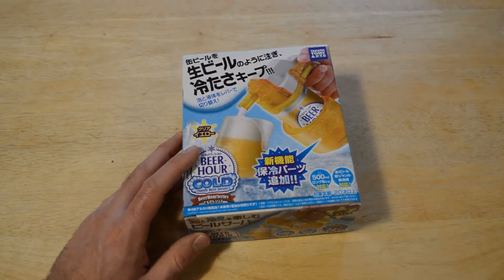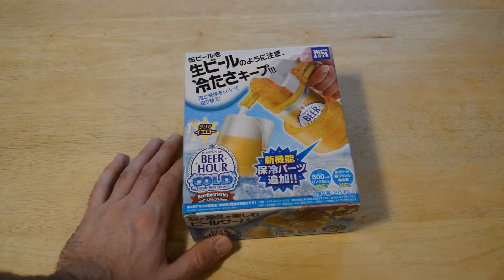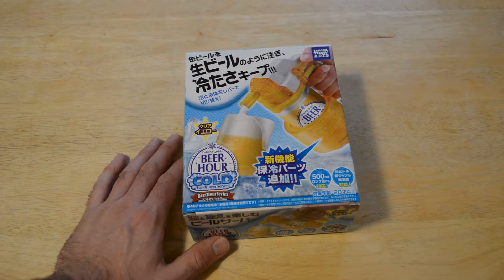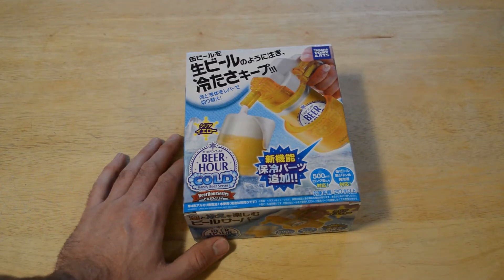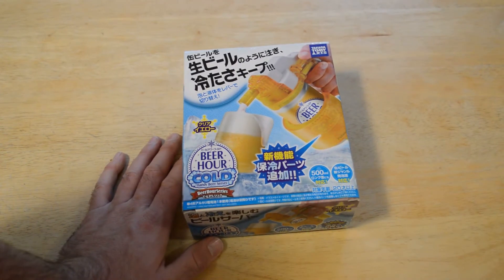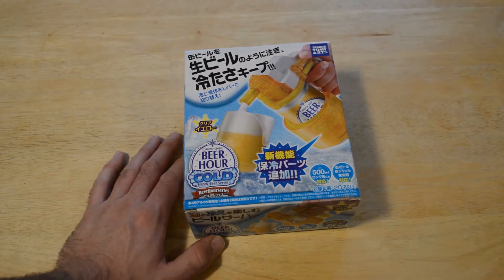Hey, what's going on everyone? Welcome to the Nine Miles Review of a product that I'm really excited to test out. This is a Japanese product. It says Beer Hour Cold, but it's a beer dispensing gadget. I ordered it online and it was a little bit less than $10, but it took a couple months to get and finally arrived and I'm really excited to test it out.